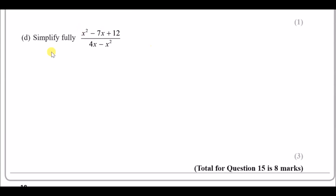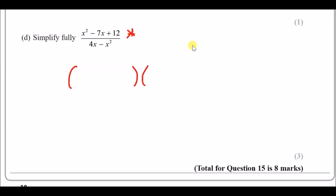For 15d: simplify fully (x² - 7x + 12) / (4x - x²). In this case you have to factorise the top and bottom separately. The top half is a quadratic, and we can factorise it into double brackets. Because we're working with x², it's going to be x in both brackets.